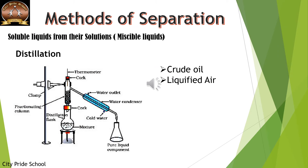The next method of separation is distillation, where we get both the solute and the solvent. It is a means of separating soluble liquids from their solutions. You can see a distillation flask connected to a condenser. When the mixture is heated, the water evaporates and the water vapor passes through the tube. Cold water flowing in the condenser condenses the water vapor into liquid water.